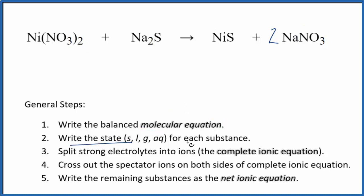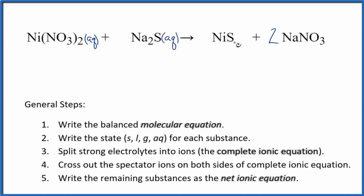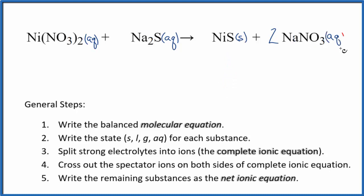Now we need to write the state for each substance. If you know your solubility rules, nitrate is very soluble, so this is going to be aqueous, split apart into its ions. Sodium compounds are also very soluble. Nickel sulfide is insoluble, so we're going to write S because it's going to be a solid — a precipitate that falls to the bottom of the test tube. Nitrate is very soluble, so aqueous for that.